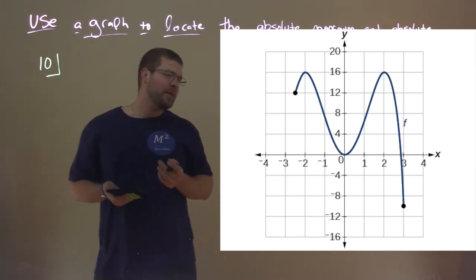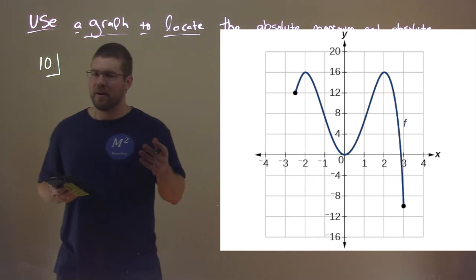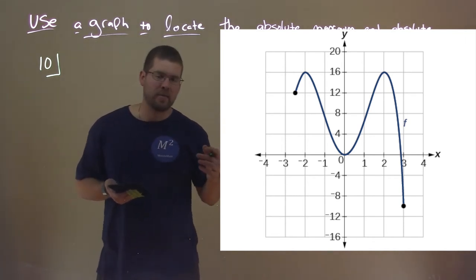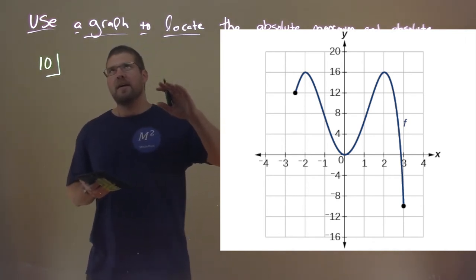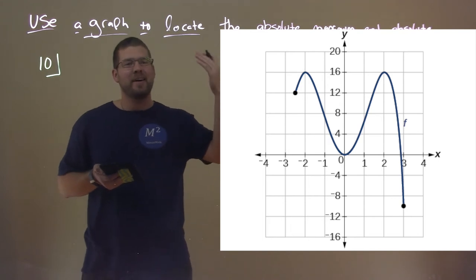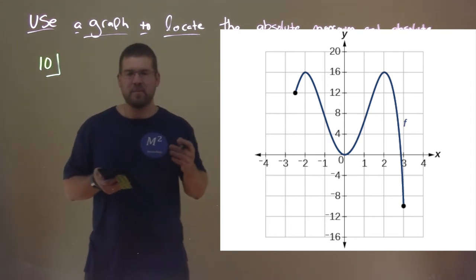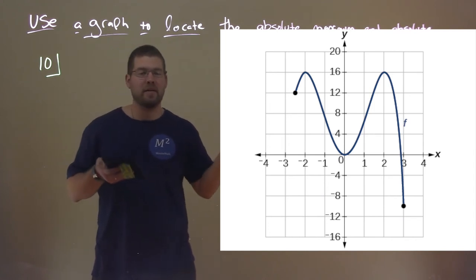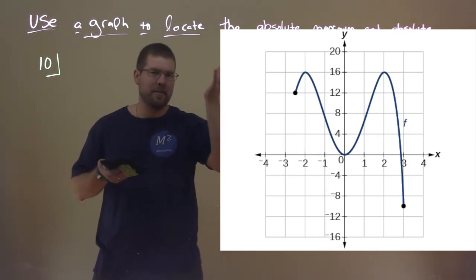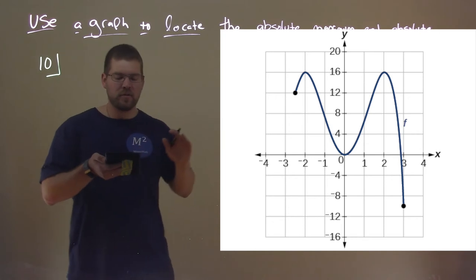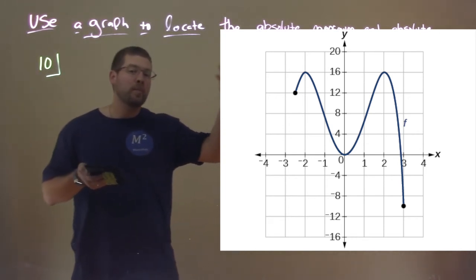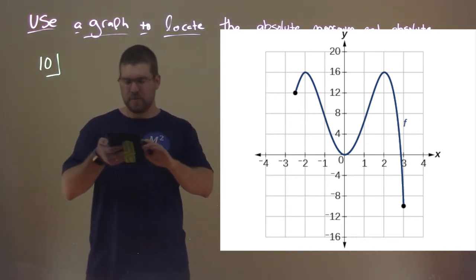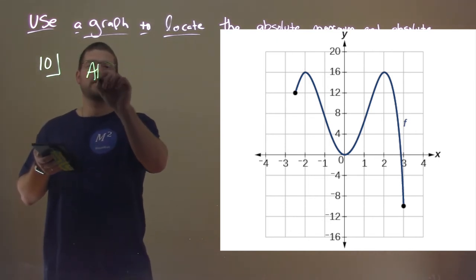Sorry, I did miss... I misspoke on having only one absolute maximum. There can only be one y value that's the absolute maximum. But sometimes, in this case here, we have two x values that have that same height. That same absolute height. So, if we notice here, we have two local maximums at x equals negative 2 and positive 2.